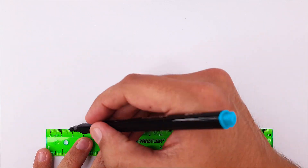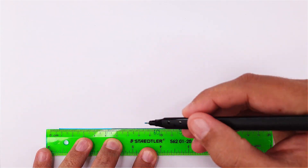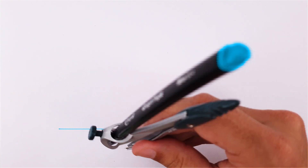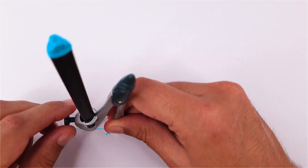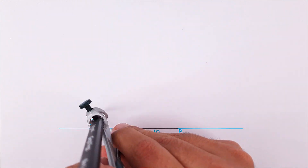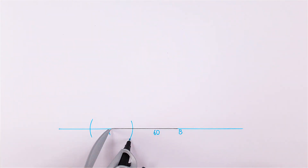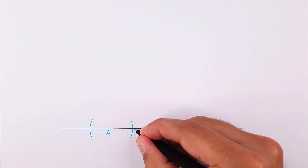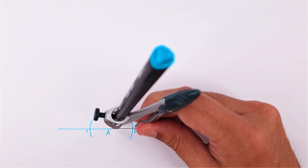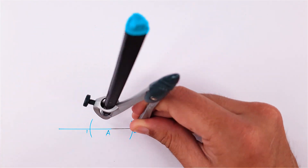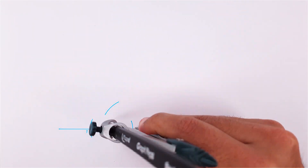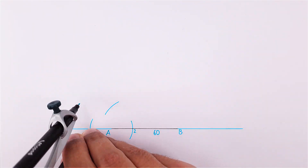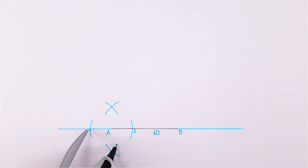Let's start by extending our side lengths to both ends and construct a perpendicular bisector on point A. Place your compass on point A and draw an arc on both sides using the same measurement. Label the intersecting points as point 1 and 2. Place your compass on point 2 and adjust it to more than half the distance to point 1. Draw an arc above and below point A. Using the same measurement, do the same on point 1 and complete the perpendicular bisector.